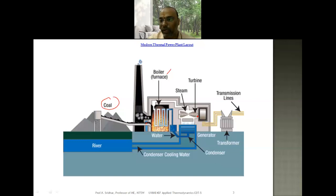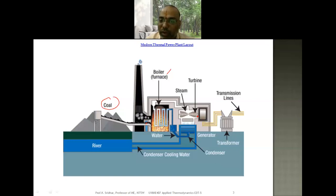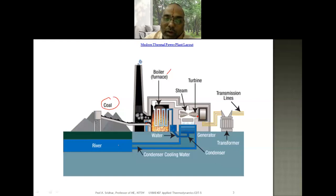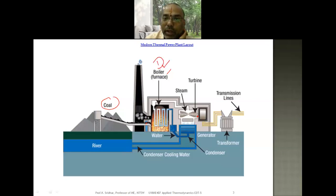The electrical power is transmitted through high-tension transmission lines with the help of a transformer. The turbine exhaust is sent to the condenser, whose purpose is to condense the steam so that the same water can be reused and sent back to the boiler. Makeup water is taken from the river to compensate for losses during condensation. The four important components of the thermal power plant are: the boiler, the turbine, the condenser, and the pump.